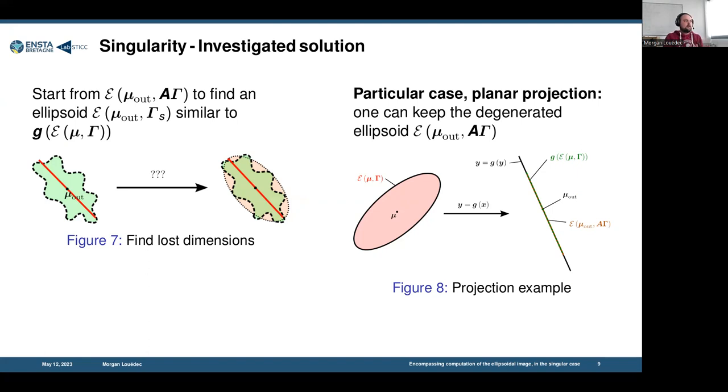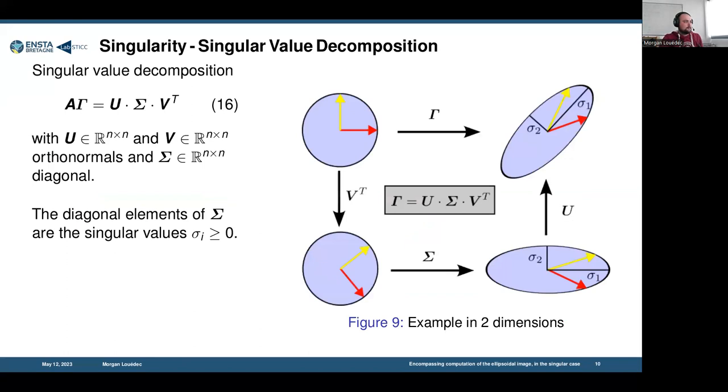Here the slide is to point out that there is a particular case where the application is itself a projection. Even if the linearized ellipsoid is degenerated, the solution itself is also reduced in dimensions. So we don't need, in this case, to add new dimensions to the ellipsoid.